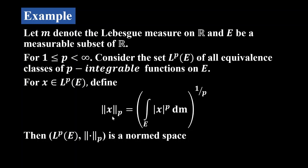We can verify every condition of the norm here. It is clear that ‖x‖_p ≥ 0, and if ‖x‖_p = 0 then obviously x = 0. We can also show that all the other conditions of a normed space are satisfied. So Lp(E) together with this norm is a normed space. Now we will go through some results related to this example.